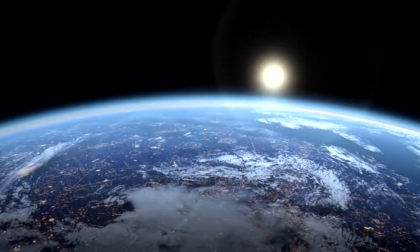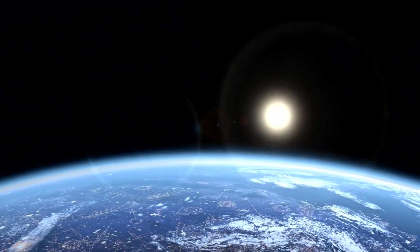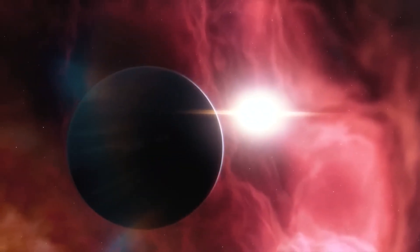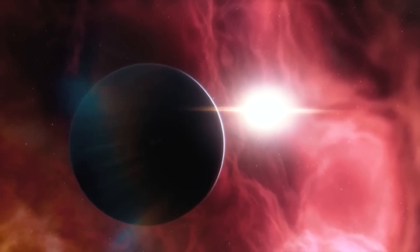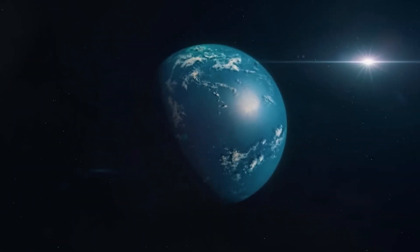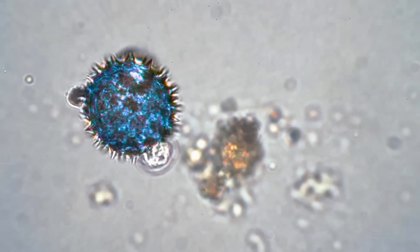One of the most surprising findings was the potential presence of water on the dark side of Proxima b. While surface water is unlikely, subsurface reservoirs could exist, insulated from the harsh environment above.